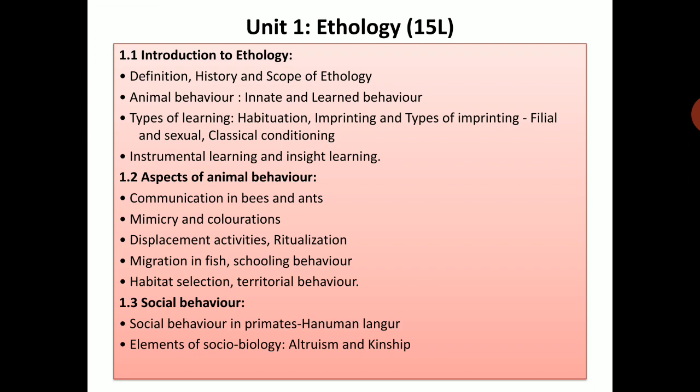In this particular topic, we are going to see the definition of Ethology, introduction to Ethology, definition of Ethology, history and scope of Ethology. What is the history of Ethology? When did man start studying the behavior of animals? What is the scope of Ethology? Basically, Ethology is the study of animal behavior — animal behavior which can be innate or learned. Innate behavior is present from birth; in simple words, it is inherited behavior which you don't need to learn from experience or any techniques. Learned behavior is what you learn after birth through experience and observation.